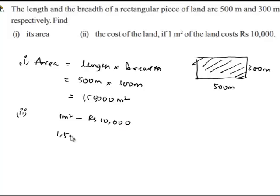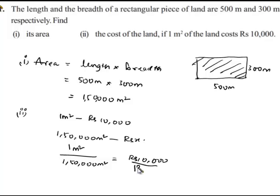Let us assume that 150,000 meters squared of land costs Rs X. Here we need to find the value of X. So by the concept of ratios, we can write: 1 meter squared by 150,000 meters squared is equal to Rs 10,000 by Rs X. Thus by cross multiplication, we get...